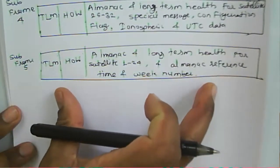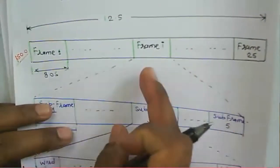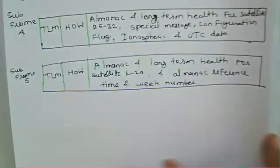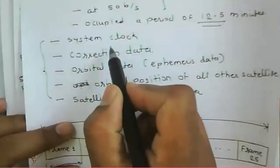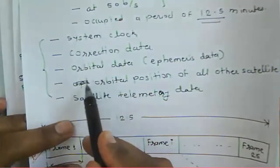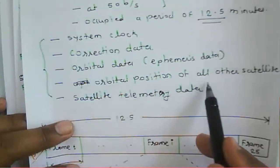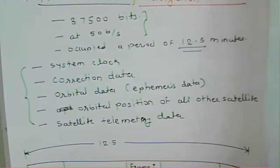Each frame has 5 sub-frames, and those 5 sub-frames contain the data. As mentioned earlier, the message contains system clock, correction data, orbital data, satellite telemetry data, and satellite position of all other satellites — that's the almanac. That is the information of this GPS message.